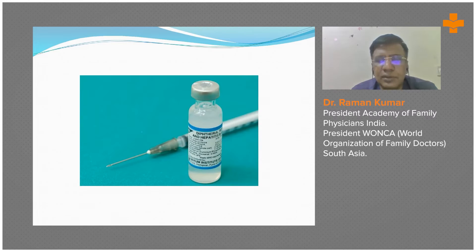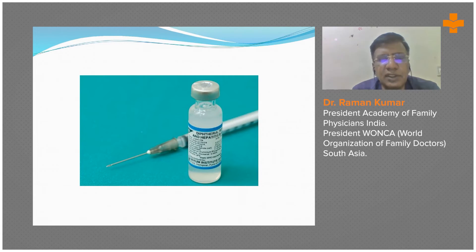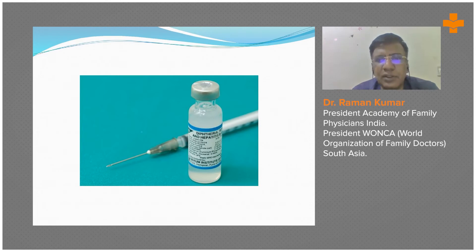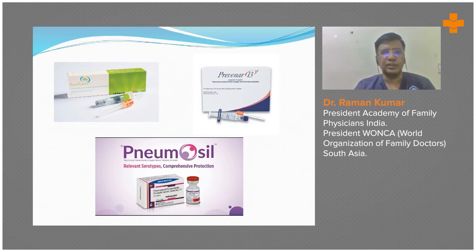It is important to see what vaccines look like. For example, DPT plus Hepatitis B vaccine produced by Serum Institute — knowing what vaccines look like, whether they are pre-filled or need to be reconstituted, is important. We can administer them properly only when we know these details.